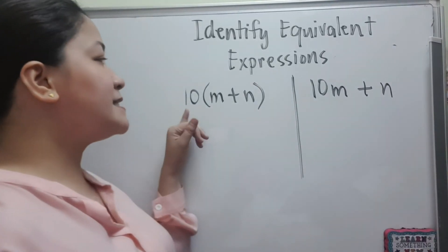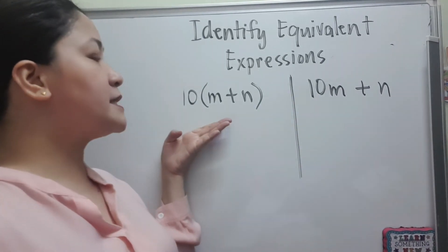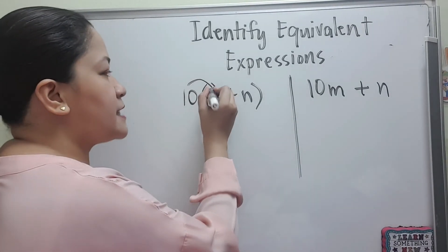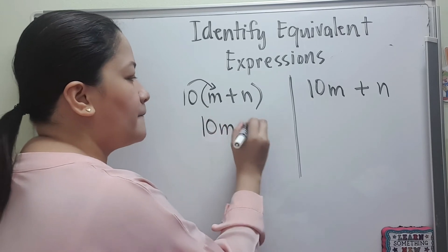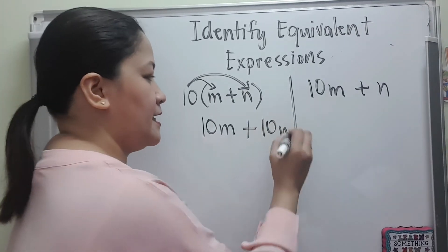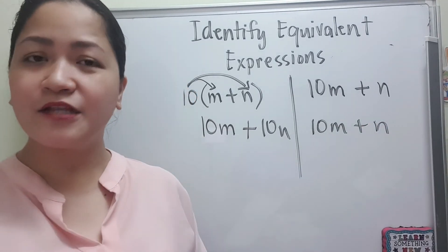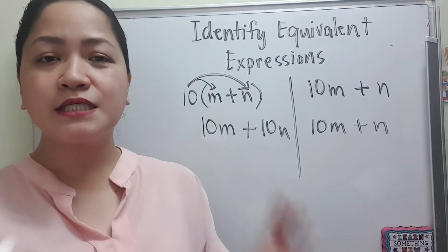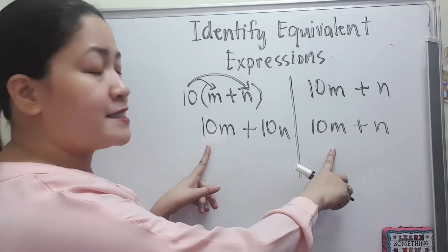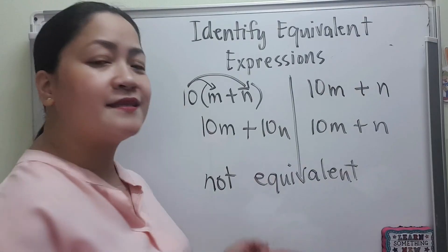Now let us see if 10 times the quantity of m plus n is equivalent to 10m plus n. For the first expression, we can use the distributive property: 10 times m is 10m, plus 10 times n is 10n. The other expression is 10m plus n. Looking at the first terms — yes, they are the same. But the second terms, 10n and n, are not the same, so they are not equivalent.